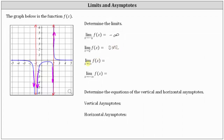Next, we have the limit of f of x as x approaches infinity. As x approaches infinity, we're moving to the right along the function. The horizontal axis is the x-axis, where positive infinity is to the right and negative infinity is to the left. As we move to the right along the graph and x approaches positive infinity, we can see the function values approach zero, which is the value of the limit. The limit of f of x as x approaches infinity equals zero.